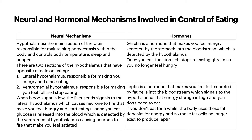Looking at neural and hormonal mechanisms involved in the control of eating: the hypothalamus is the main section of the brain responsible for maintaining homeostasis and controls body temperature, sleep, and hunger. There are two sections with opposite effects on eating. The lateral hypothalamus makes you hungry and start eating, while the ventromedial hypothalamus makes you feel full and stop eating. When blood sugar is low, the liver sends signals to the lateral hypothalamus, causing neurons to fire that make you feel hungry. Once you eat, glucose is released into the blood, detected by the ventromedial hypothalamus, causing neurons to fire that make you feel satiated or full.